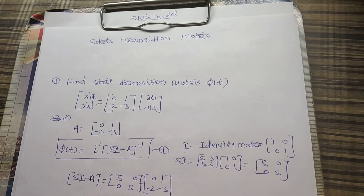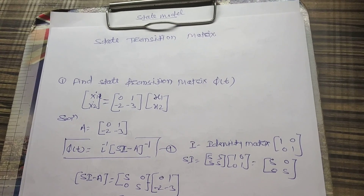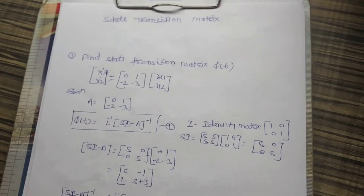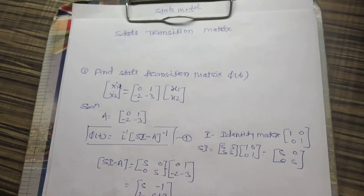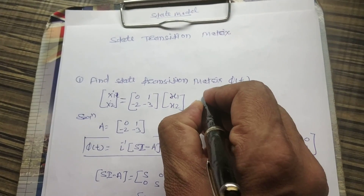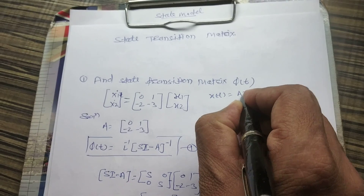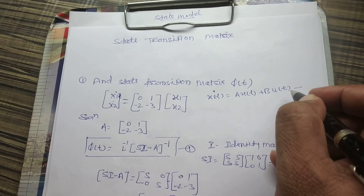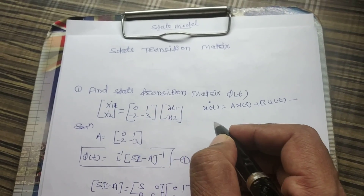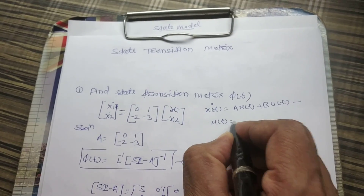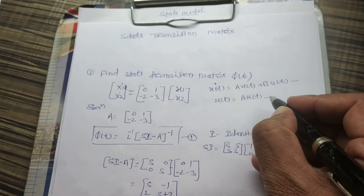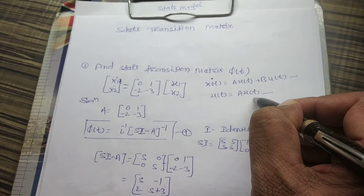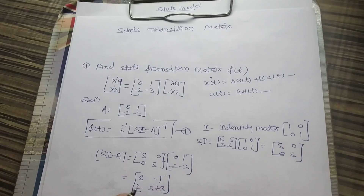In this session we will see some example problems on how to find the state transition matrix for a given system. We have seen two types of equations in state space analysis. One is the dynamic equation: x-dot of t equals A·x(t) plus B·u(t). The other is the linear homogeneous equation: x-dot of t equals A·x(t). Whether the system is dynamic or homogeneous, the process to find the state transition matrix is the same.